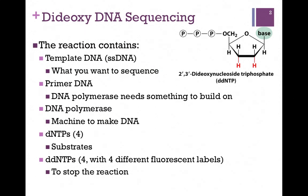We also need a short primer DNA. This will anneal to the template, and it provides DNA polymerase the 3'OH it needs in order to build on. Of course, we have to have DNA polymerase, the enzyme that synthesizes the DNA, and we need the substrates for the polymerase — the four deoxynucleotide triphosphates. We're also going to include four dideoxynucleotide triphosphates.